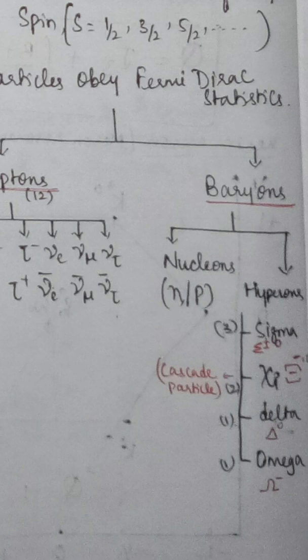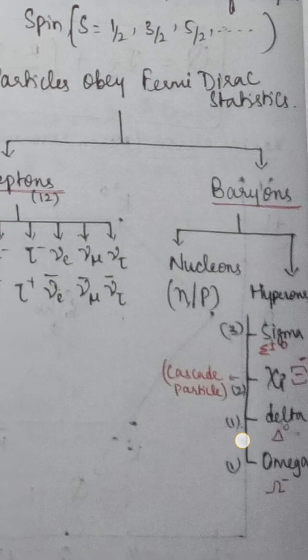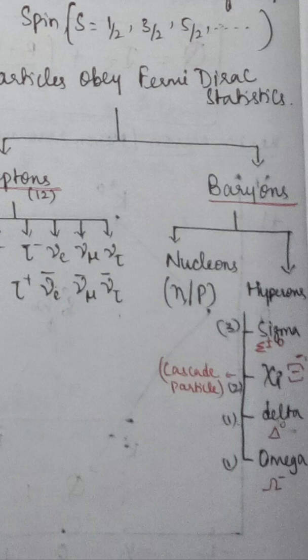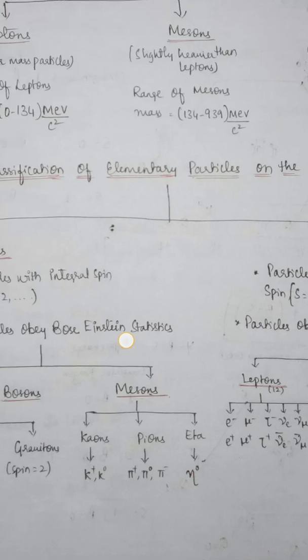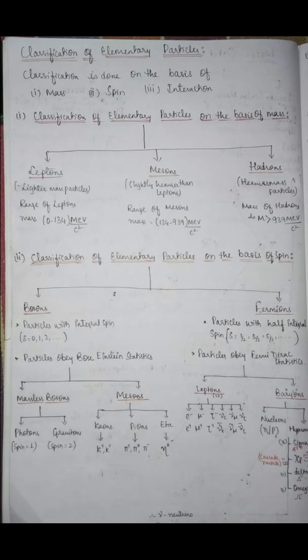Hyperons include cascade particles — cascade-negative and cascade-naught — as well as delta-naught and omega-minus. This completes the classification of elementary particles based on mass and spin. In the next video, we will cover the classification of elementary particles based on interaction. Thank you.